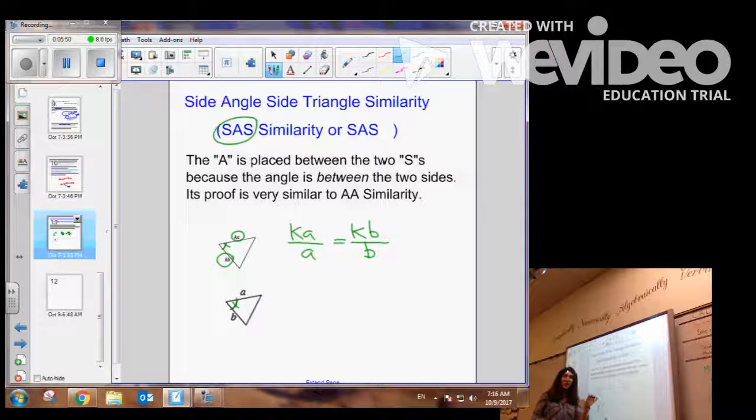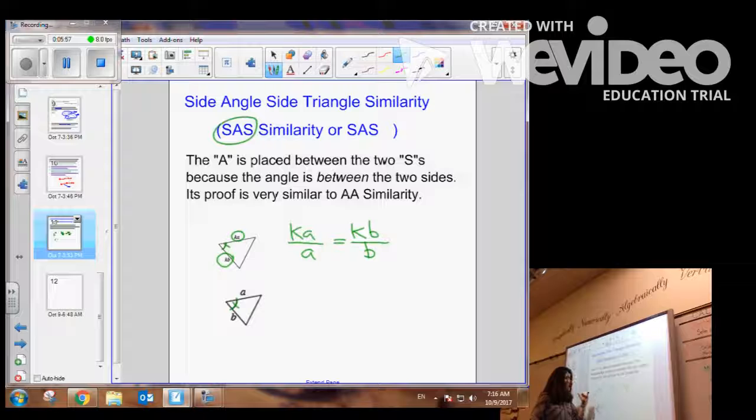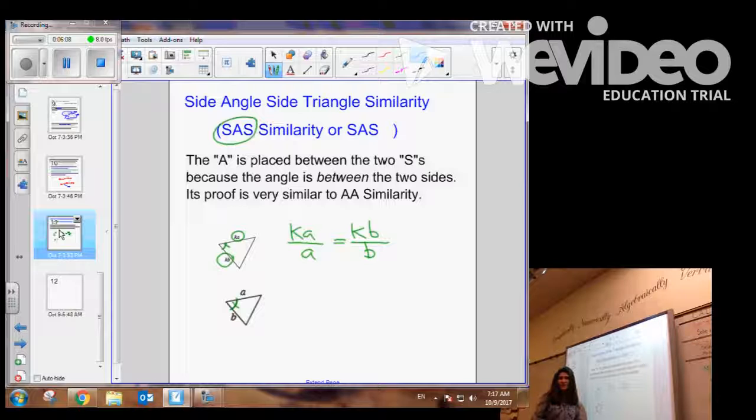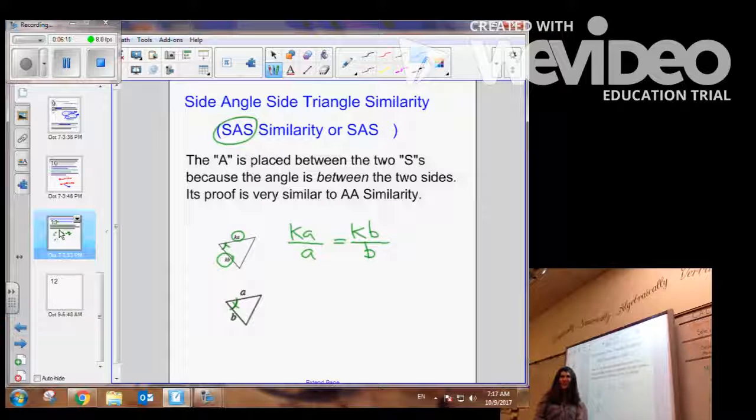So, we have ratio of corresponding sides, KA to A, an angle between, congruent, and then the ratio of KB to B, side-angle-side. And again, I could show their similarity by doing a sequence of transformations. So, I hope you got all of this summarized into your lesson, and I will see you again next time.